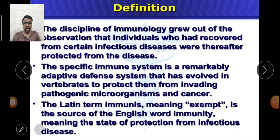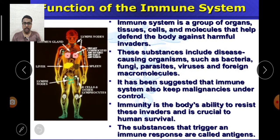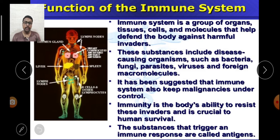Hello friends, today we are going to look at the immune system, its components, and the mechanism through which it protects the body. We will also study some aspects of immunology. The term 'immunis' is a Latin word derived from 'exempt,' meaning state of protection from infectious diseases. All the components and constituents which protect and help in defending the body against pathogens or infectious agents are part of the immune system — a group of organs, tissues, cells, and molecules collectively called the immune system.